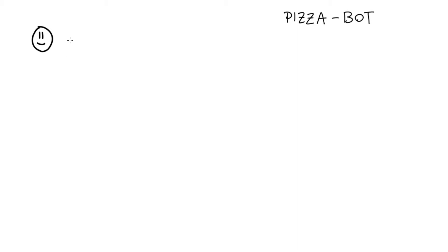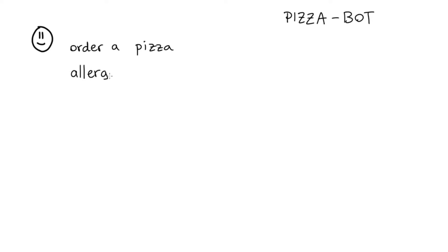Let's consider some of the functionality that we'd like to have. First and foremost, we'd like you to be able to order a pizza — this is going to be probably the main feature of the assistant. But you can also imagine that there's information that the user might want to retrieve, things like allergy information and nutritional information.